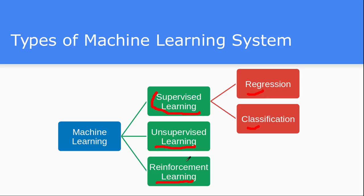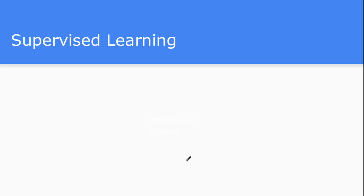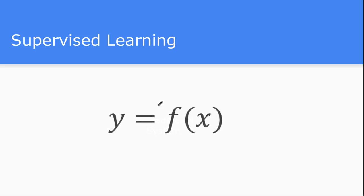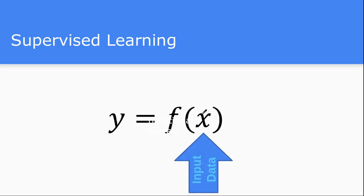So this is supervised learning. Just concentrate on this very simple functional mapping y = f(x). In supervised learning, x is our input data — we supply a huge amount of data into x. We also have a label associated with every individual record, which we call y.